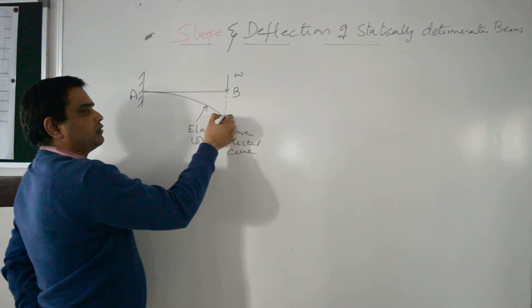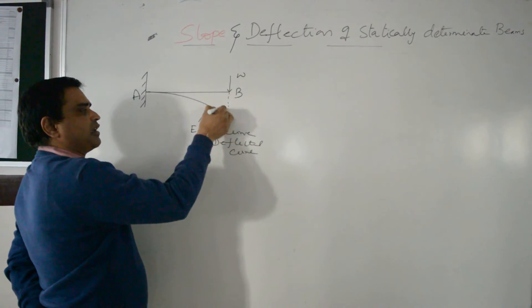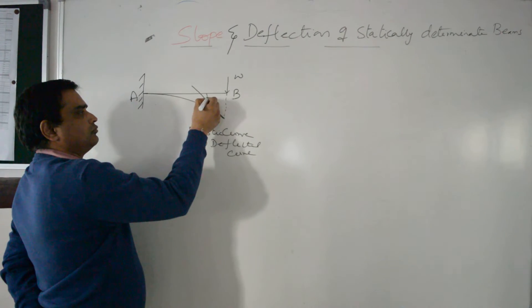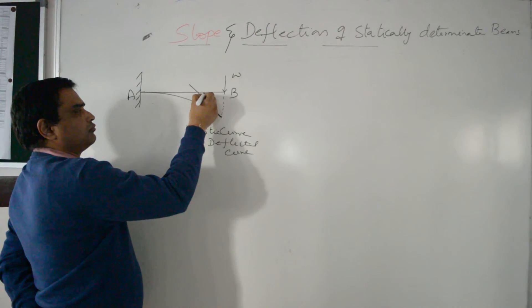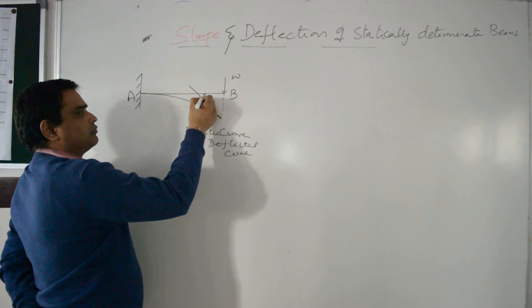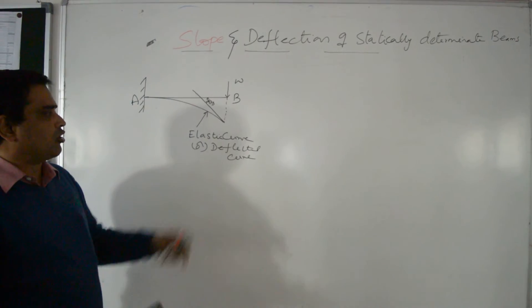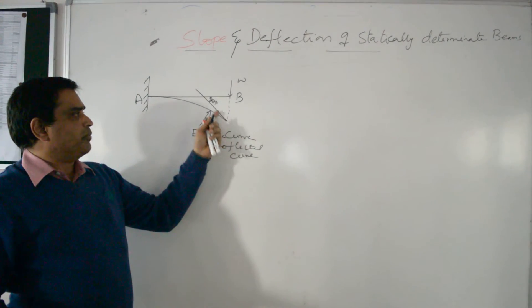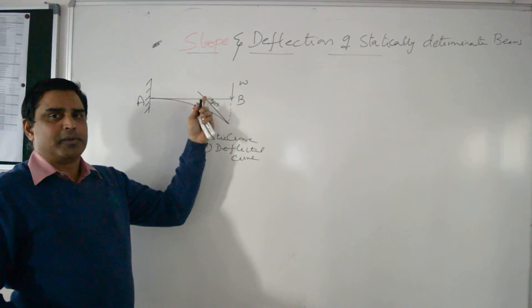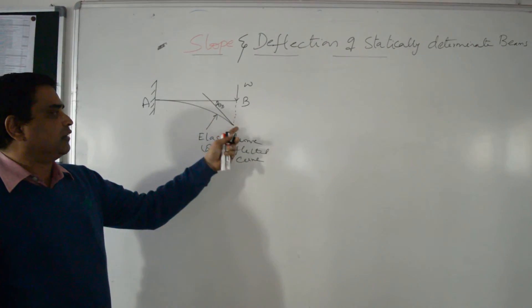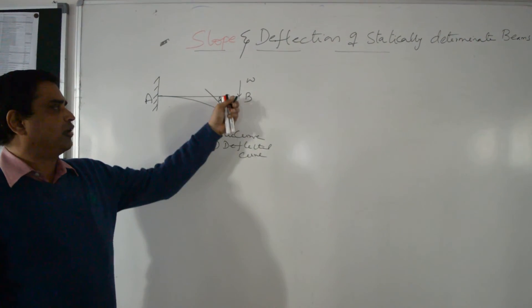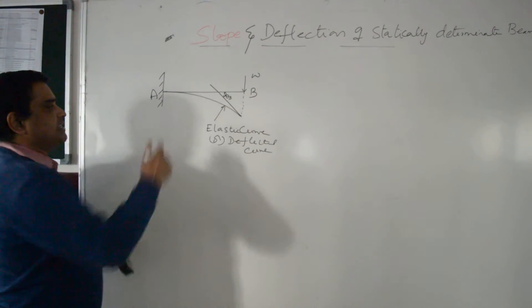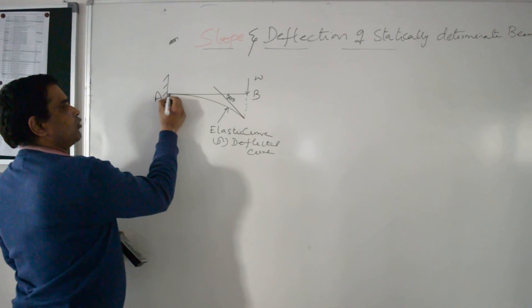Draw a tangent on this elastic curve. This is the tangent drawn on the elastic curve, and it meets the axis of the beam. Slope is the angle between the tangent drawn on this elastic curve and the axis of the beam.